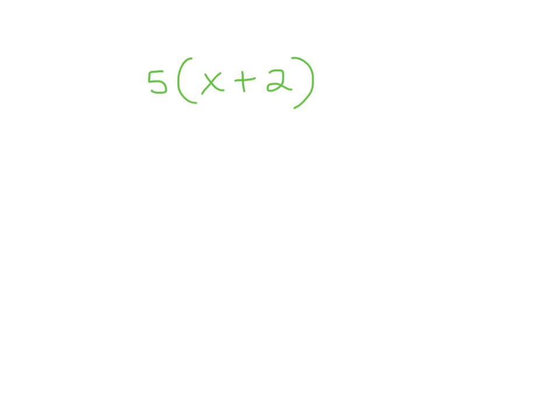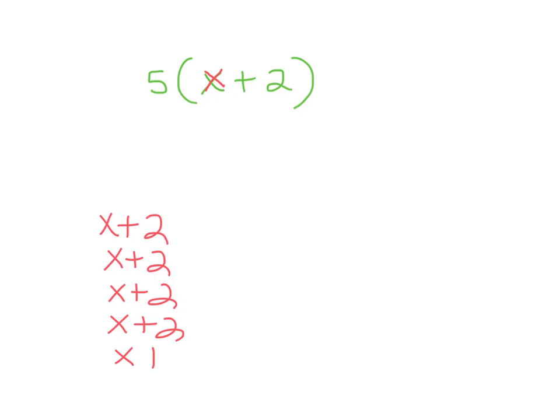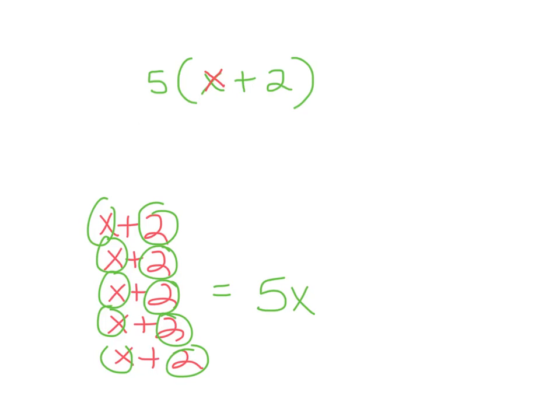Now I'm going to show you one with a variable — a number I don't know, so I call it x. I still want to simplify the expression. This means 5 groups of (x plus 2). Writing it out the long way: x+2, x+2, x+2, x+2, x+2 — five groups. Counting up, I have 5x, plus 2+2+2+2+2 which is 10. So that equals 5x plus 10.